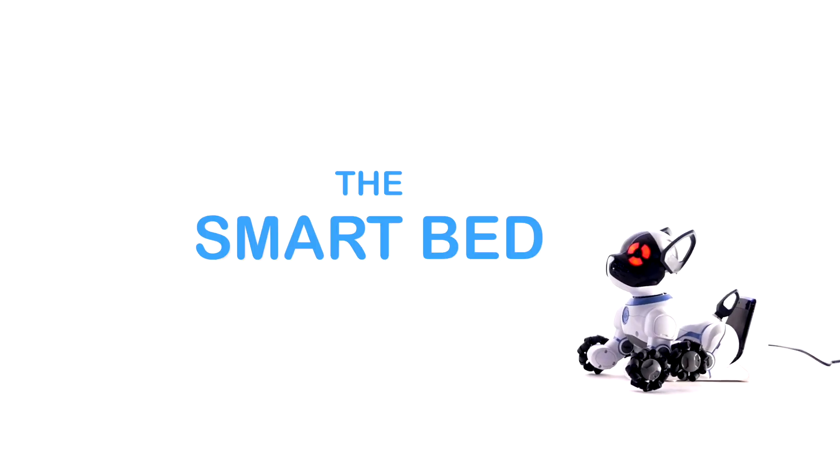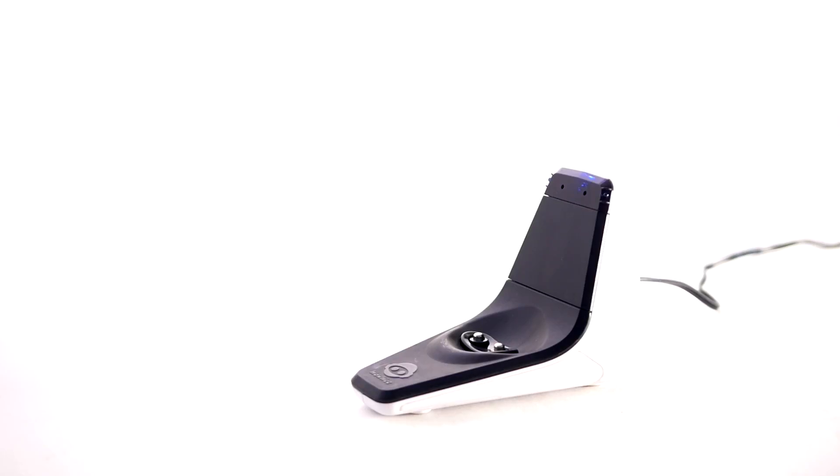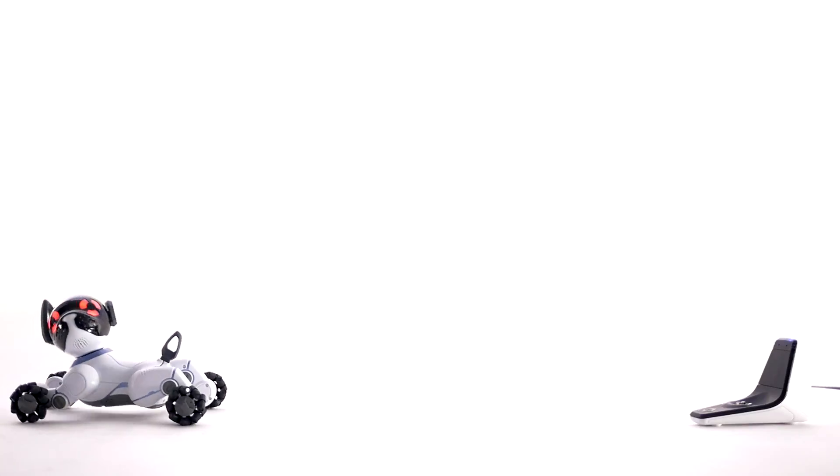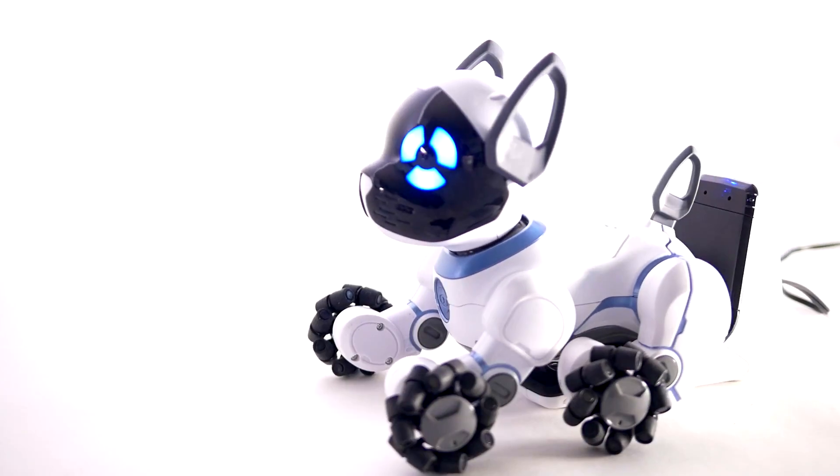Whenever Chip is low on energy or idle for too long, he'll retreat to his smart bed where he can recharge until you're ready to play again. When you plug it in for the very first time, he'll stop whatever he's doing and head for his bed. Be sure to keep the bed somewhere accessible to Chip so he can get to it easily.